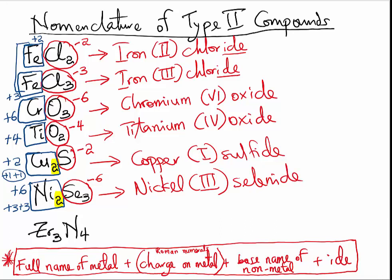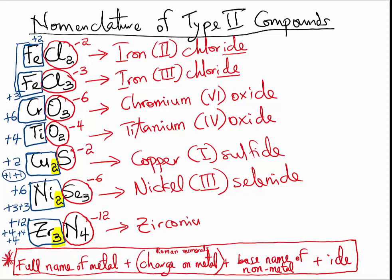Let us take a look at the last naming example. As usual, we begin from the non-metal, which is nitrogen. Nitrogen is from group 5A, which means the charge on one atom of nitrogen is going to be minus 3. We have 4 atoms of nitrogen, so the total negative will be negative 12. The total positive must also be positive 12. We have 3 atoms of zirconium, so each zirconium atom will have a charge of plus 4. That means the name of this compound will be Zirconium(IV) nitride.